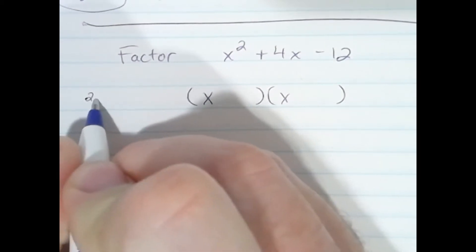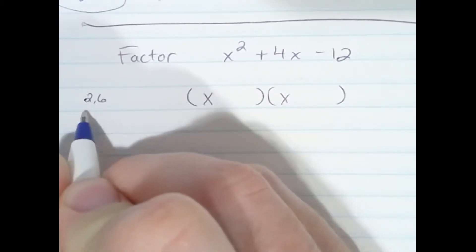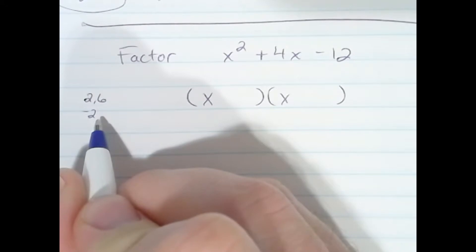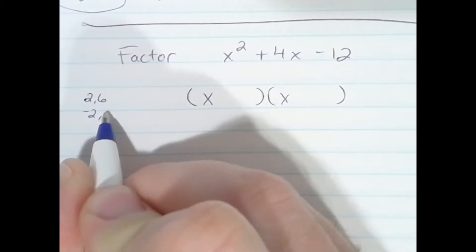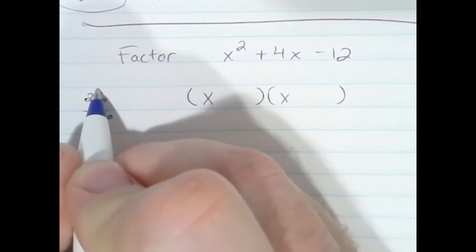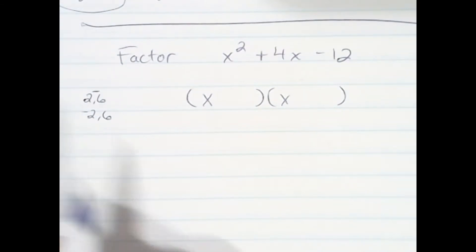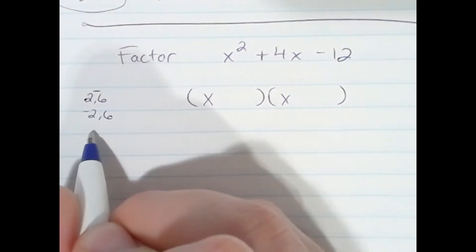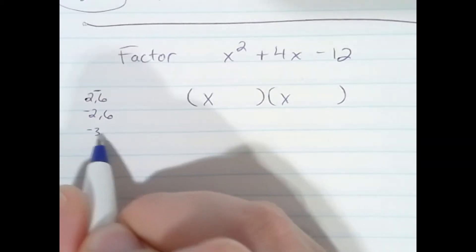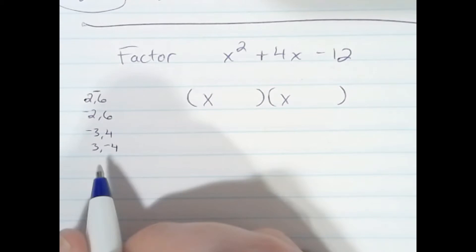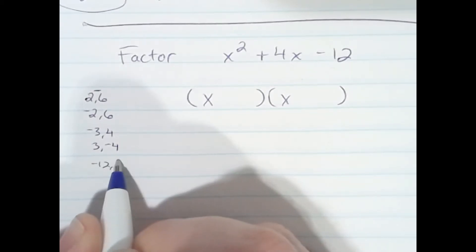2 and 6, for that matter, negative 2 and positive 6. And let's make that 6 a negative, because one of the factors has to be negative. How about negative 3, positive 4, positive 3, negative 4, negative 12, positive 1, positive 12, negative 1.